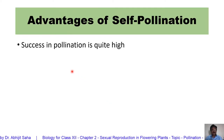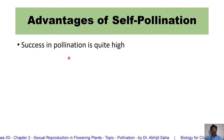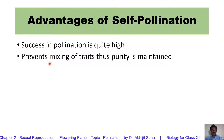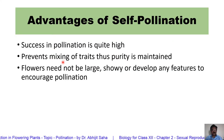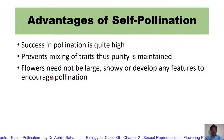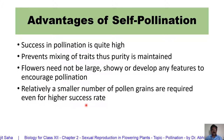Is there any advantage of self-pollination? Yes, there are some. Number one, the pollination rate is very high. Next, genetic purity is maintained — there is no mixing of traits. The flowers need not be large, showy, or develop features to attract any pollinating agents. A smaller number of pollen grains is sufficient even for attaining a higher success rate of pollination. In such flowers, there is no dependency on external factors or agents — they do not require any agents for pollination.